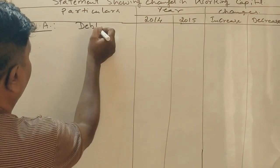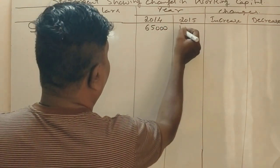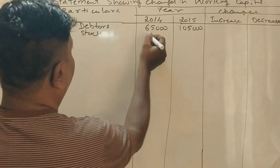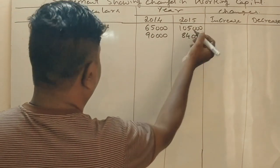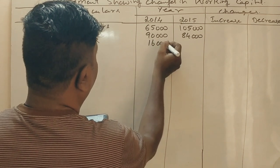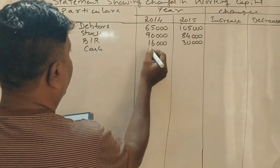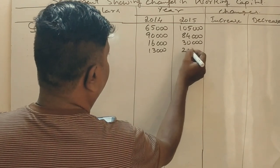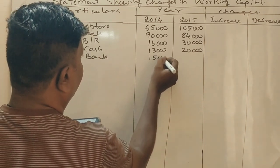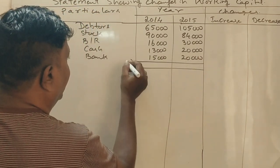Now for the current assets: debtors are 65,000 and 1,05,000; stock is 90,000 and 84,000; bills receivable (BR) is 16,000 and 30,000; cash in hand is 13,000 and 20,000; cash at bank is 15,000 and 20,000. Now let's calculate the total current assets.